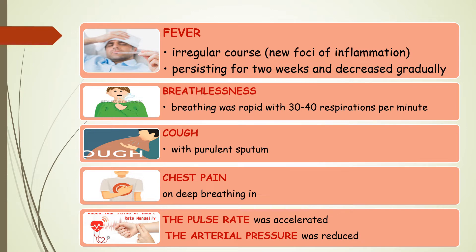The patient complained of an irregular course of fever, persisting for two weeks and decreasing gradually. His breathing was rapid at 30–40 respirations per minute, and his cough produced purulent sputum. He also complained of chest pain on deep breathing in. His pulse rate was accelerated and arterial pressure was reduced.